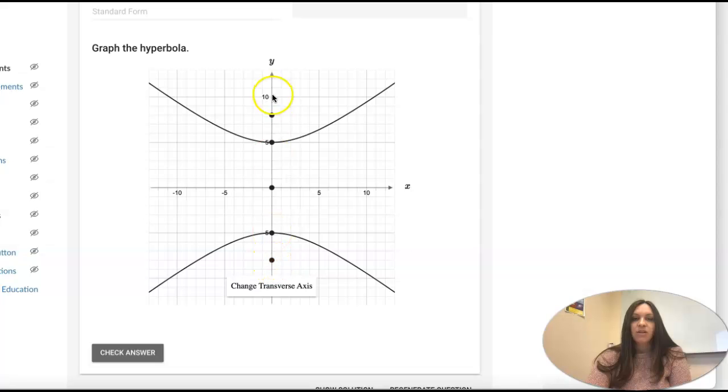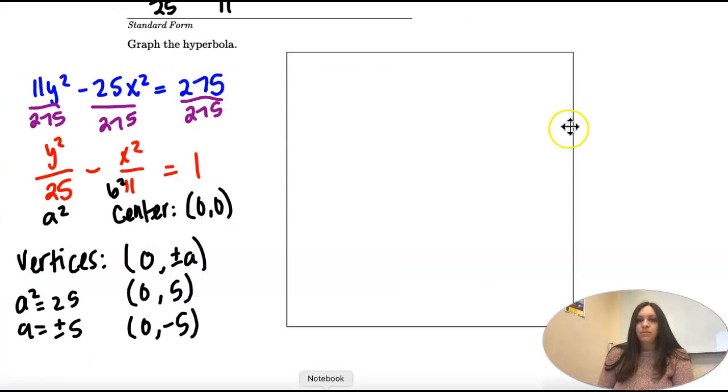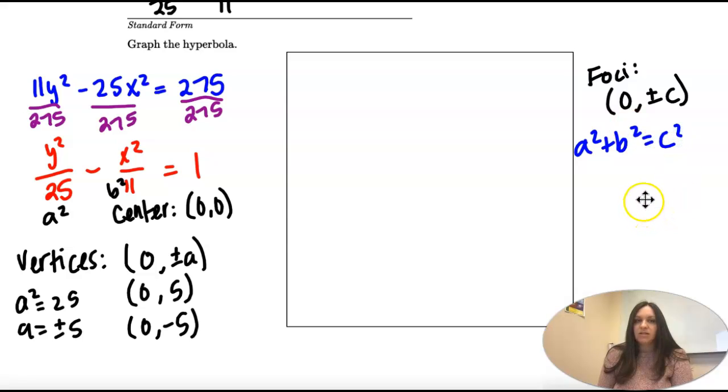So now I need to figure out where are my foci. So the foci are still on the y-axis, but they're the c-values. So we're going to use a squared plus b squared equals c squared to figure out what c is.